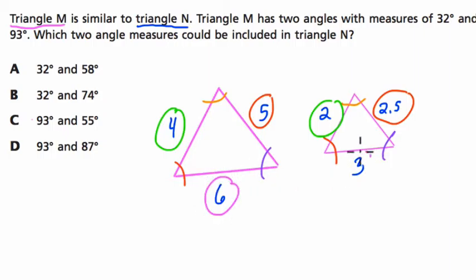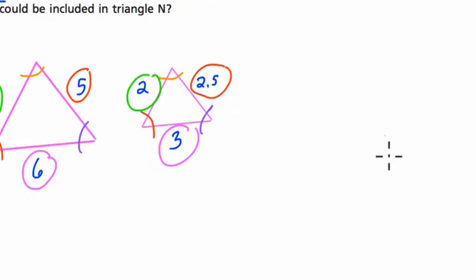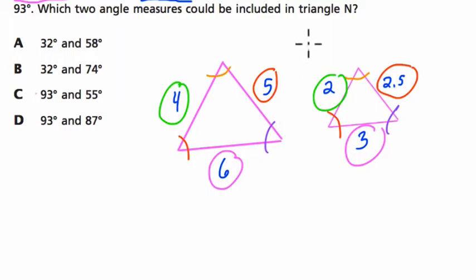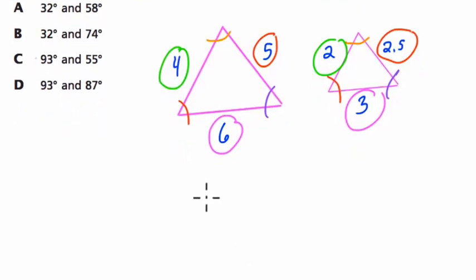If our scale factor is 2, now the corresponding sides have to be half of their original side length—if the scale factor is 1 half, I mean. So, 4 is cut in half to 2, 5 is cut in half to 2 and a half, and 6 is cut in half to 3. If the corresponding angles and corresponding side lengths follow this pattern, then we know the two are similar to each other.